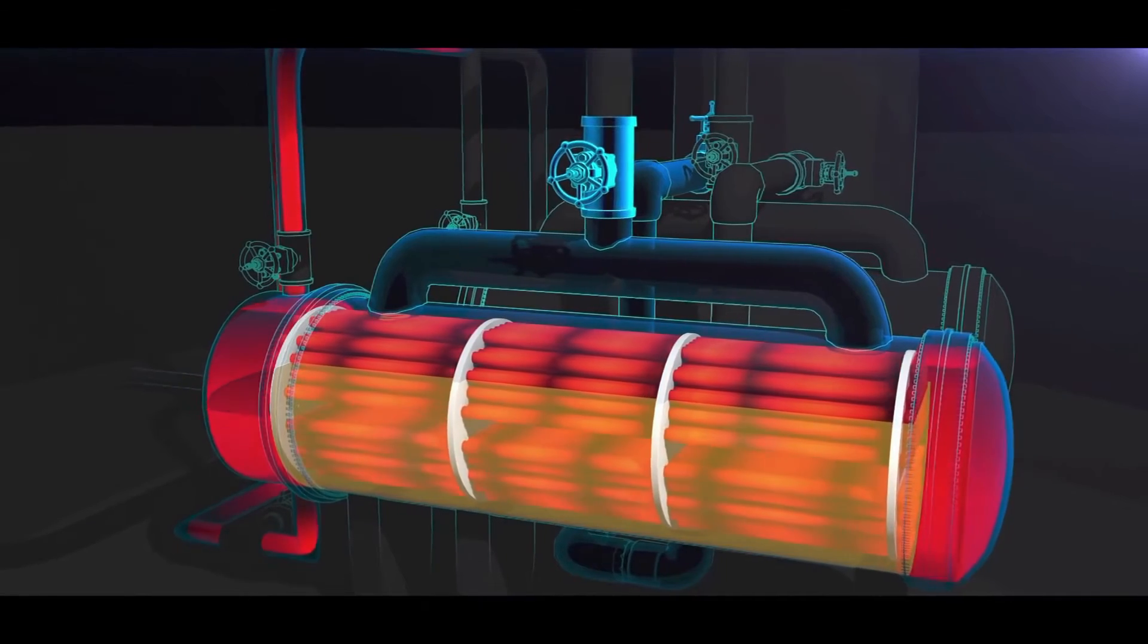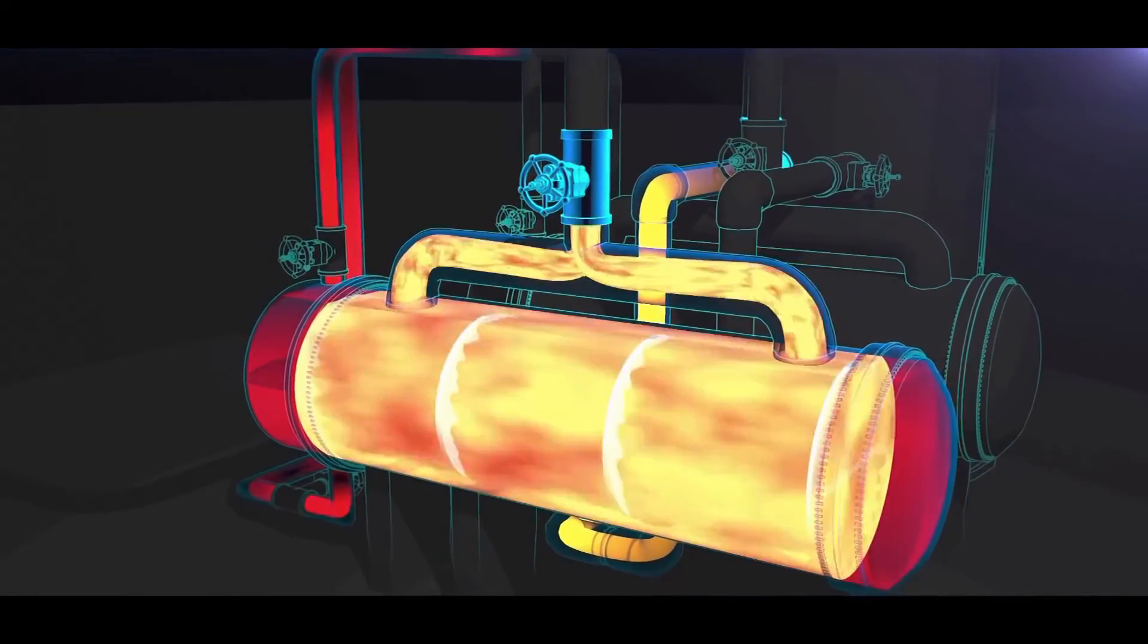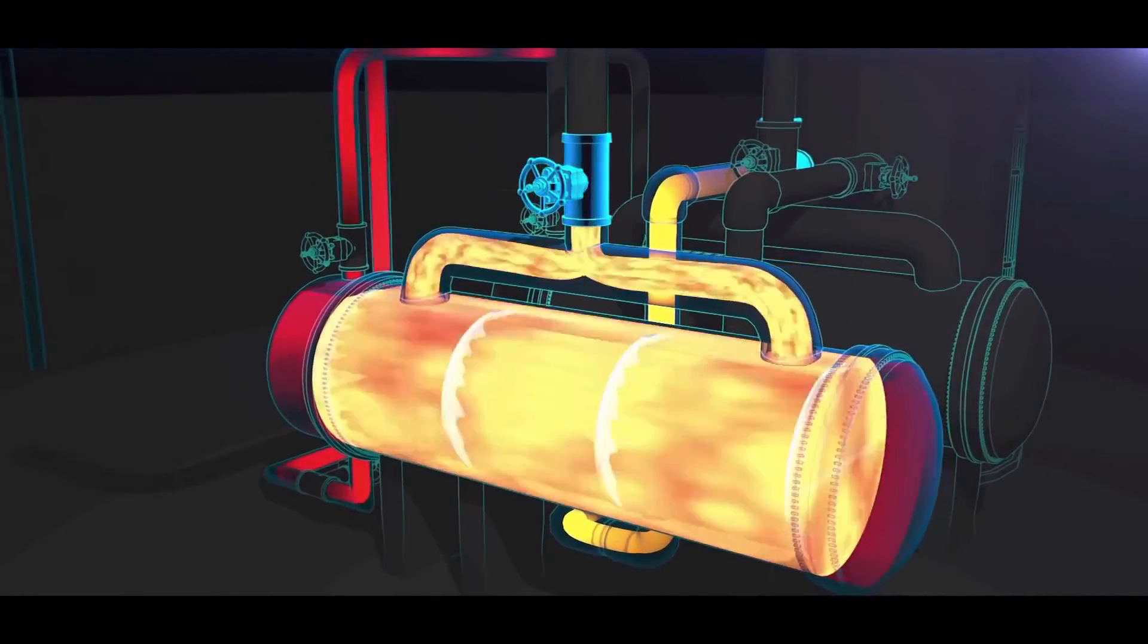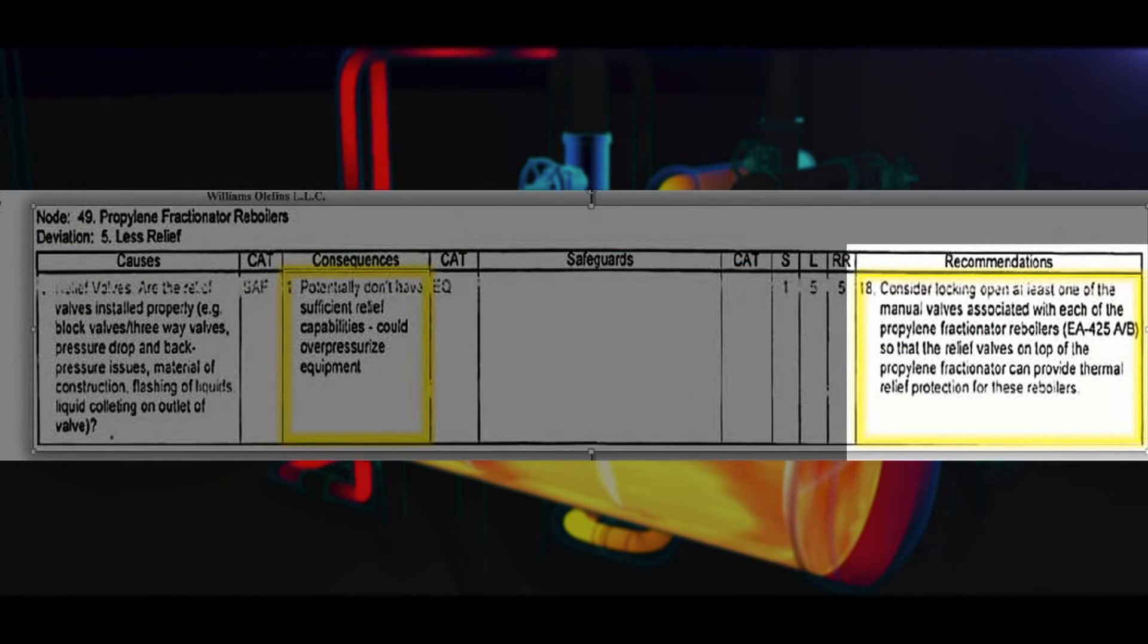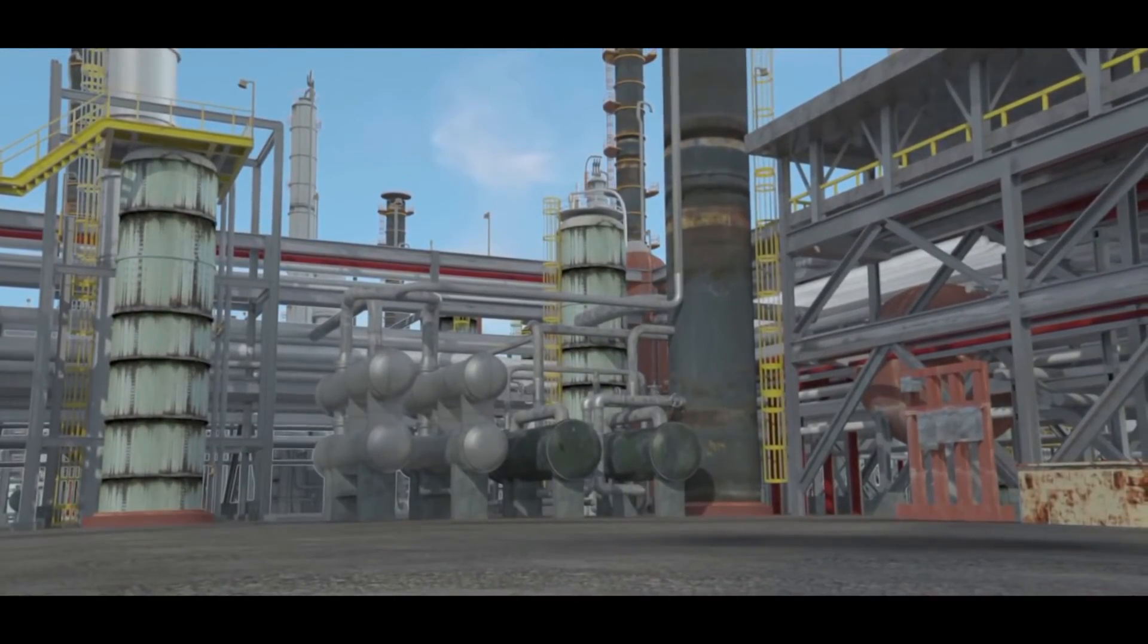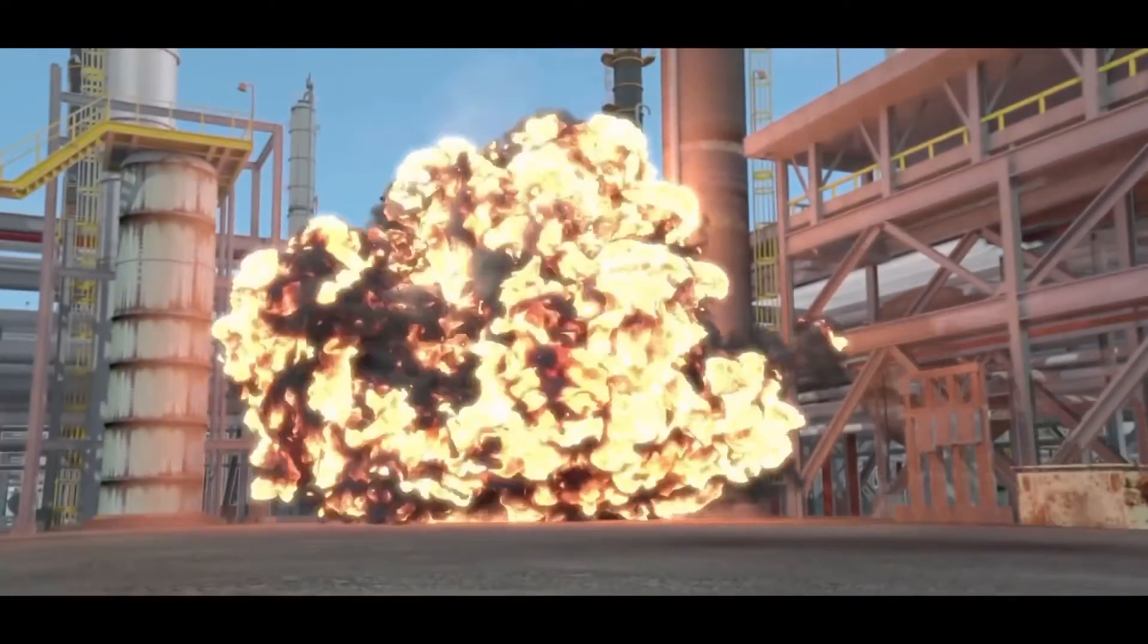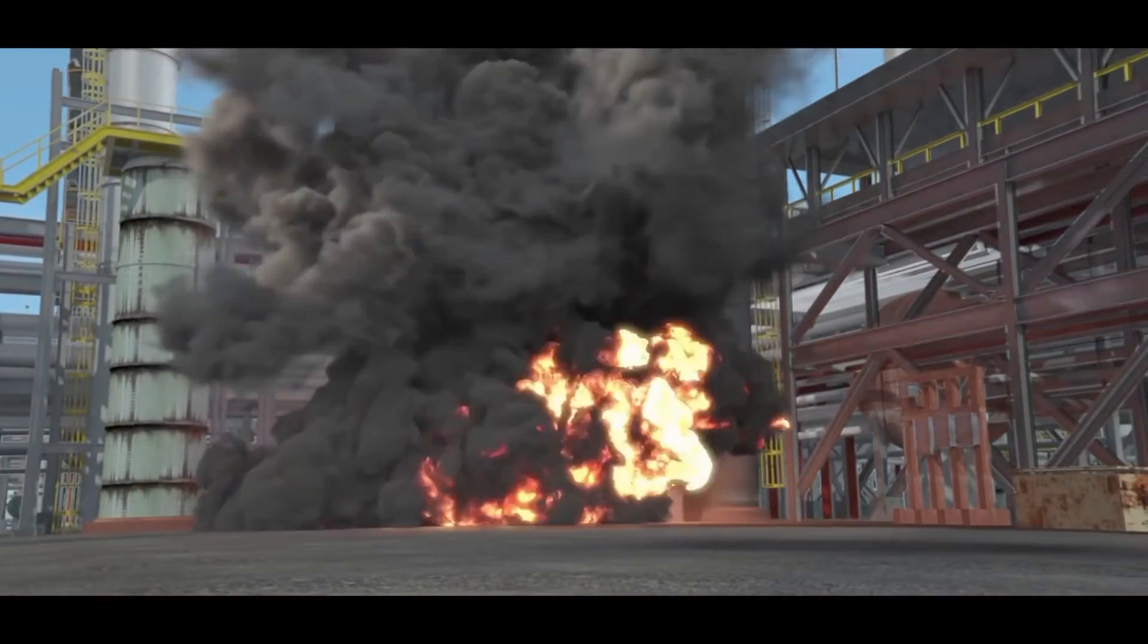An internal recommendation from the 2006 PHA stated, consider locking open at least one of the manual valves associated with each of the propylene fractionator reboilers. While that recommendation was marked as complete, the CSB found that it was not implemented as intended.